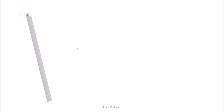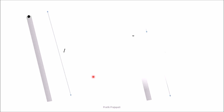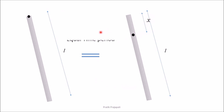The question asks: if a uniform rod having length l and mass m is hinged at the top, the natural frequency of vibration is given by time period T equal to 2π divided by the square root of 3g by 2l. Professor Walter asked at what distance from the top of the rod should the rod be hinged such that its natural frequency of oscillation is the same as when hinged at the top.